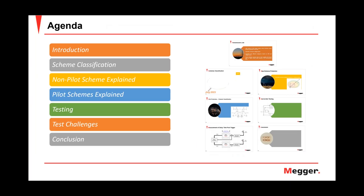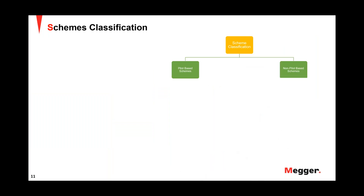Before discussing non-pilot schemes, let's talk about scheme classification. Schemes are classified under two categories: pilot-based and non-pilot-based. Pilot protection is used for high-speed tripping, where quantities at different terminals are compared using a communication channel rather than direct wire interconnection. An example of a non-pilot scheme is step distance protection, where multiple zones of settings monitor the line without communication.